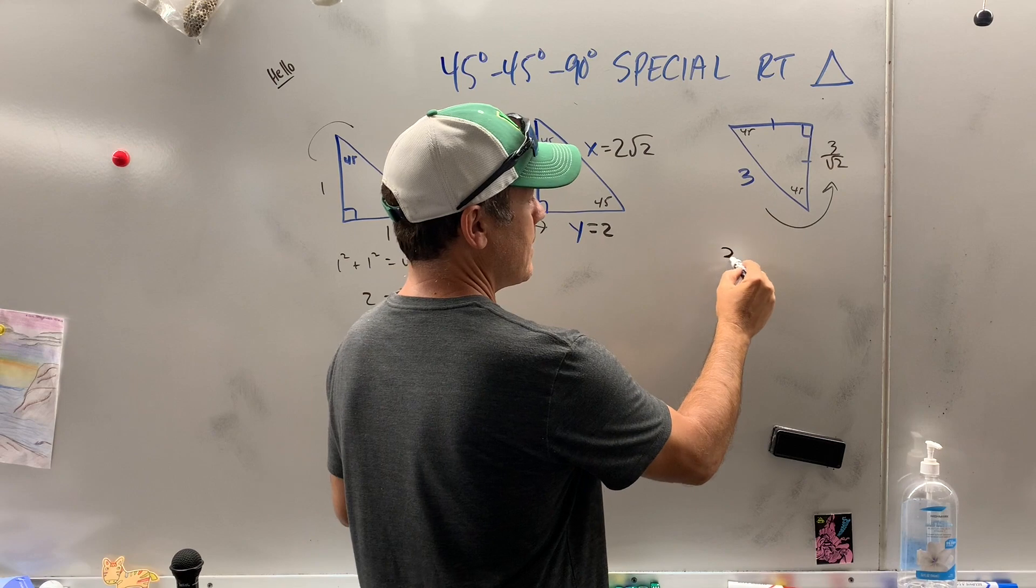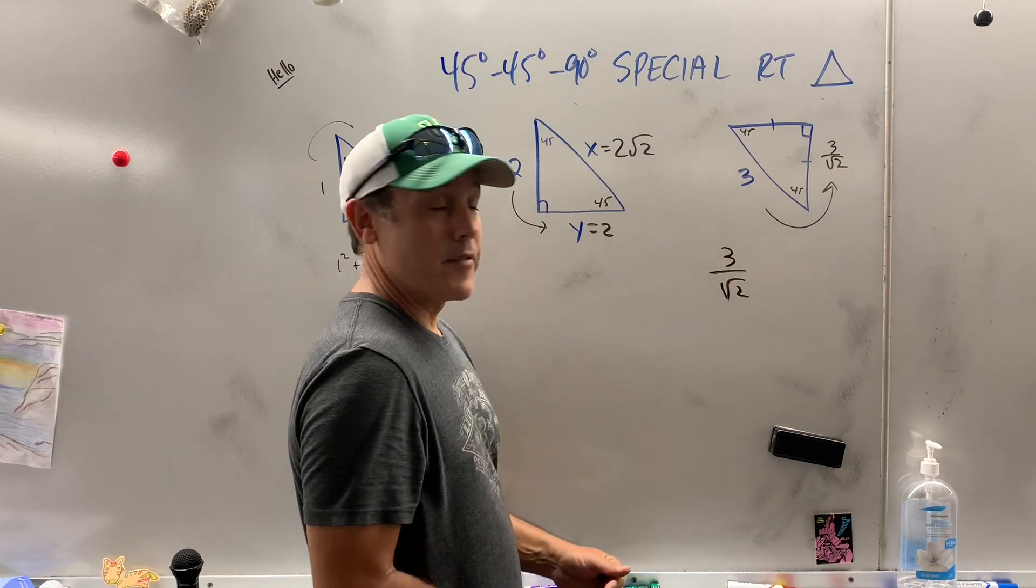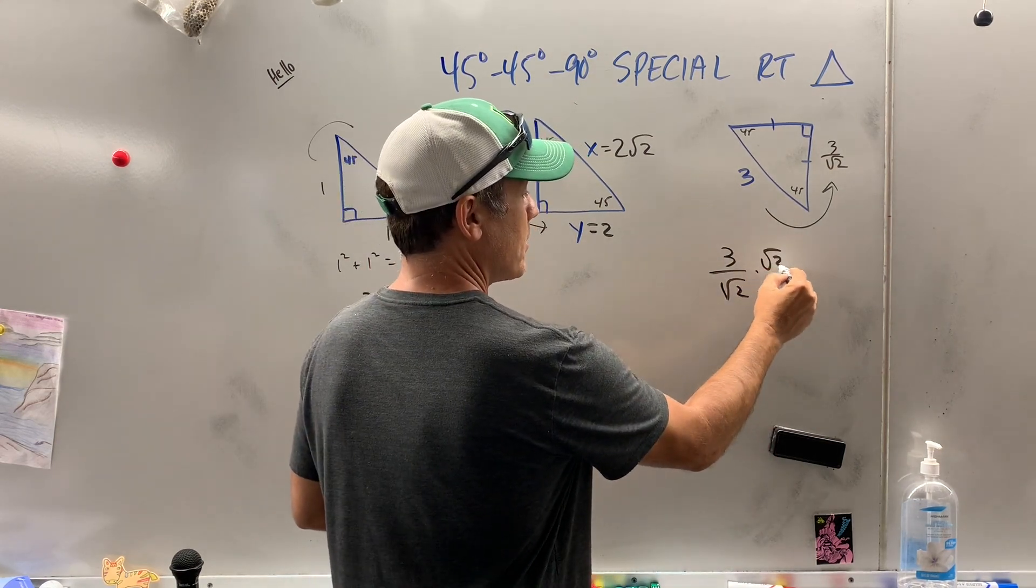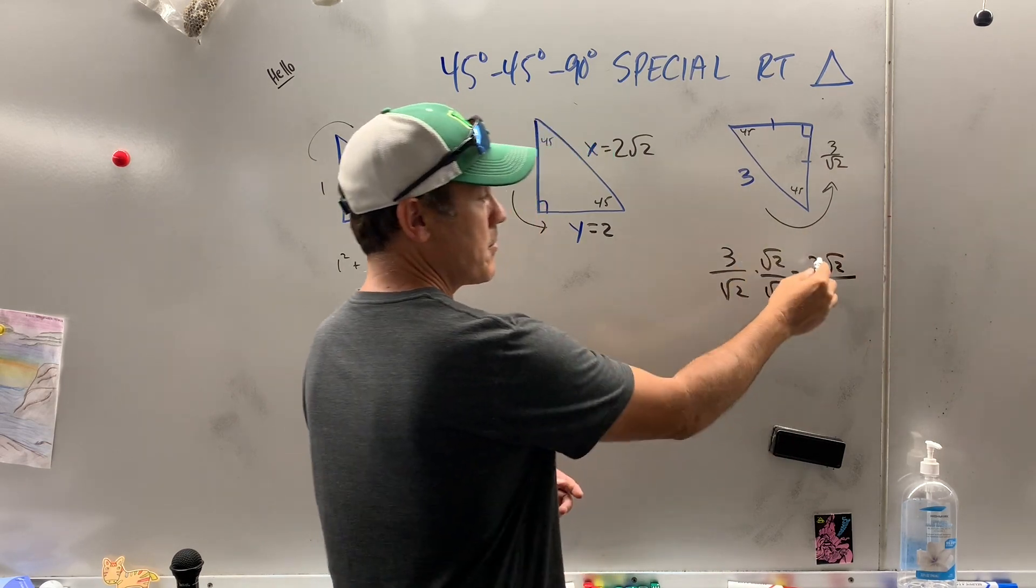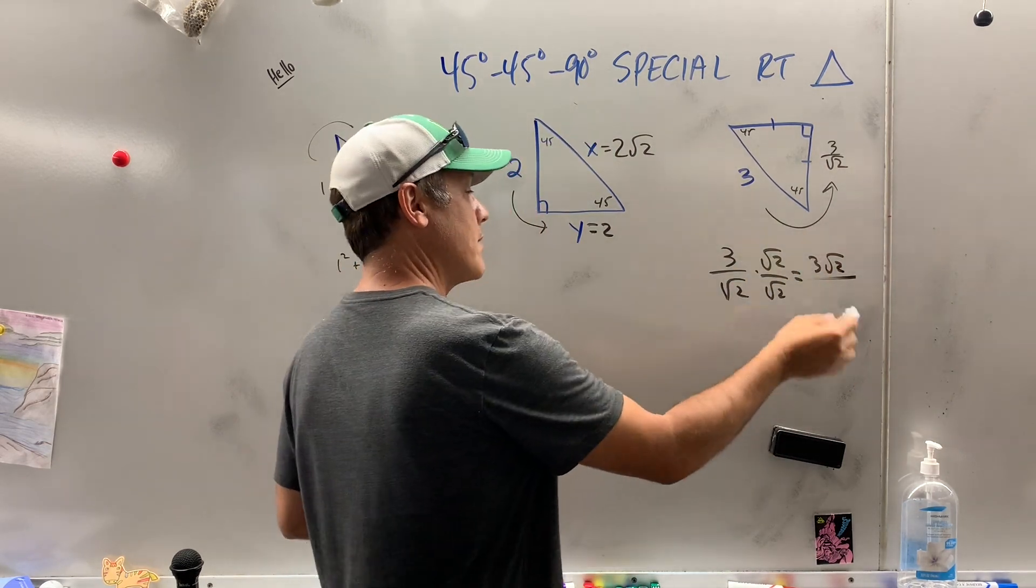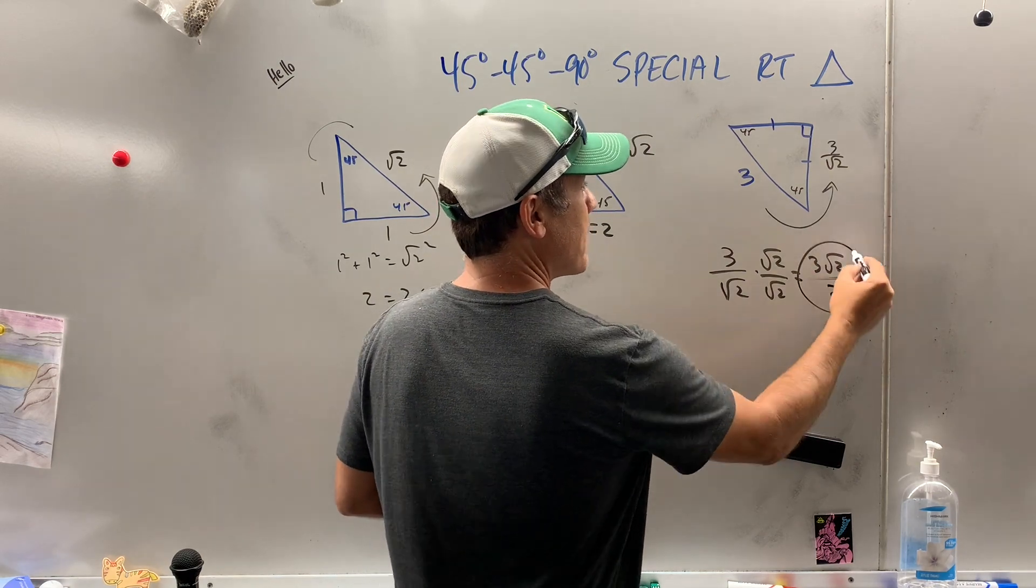Now, again, we don't want that radical in the denominator. So all you do, multiply top and bottom by what's on the denominator. 3 times radical 2 is 3 radical 2. And square root of 2 times square root of 2 is 2. There's my answer.